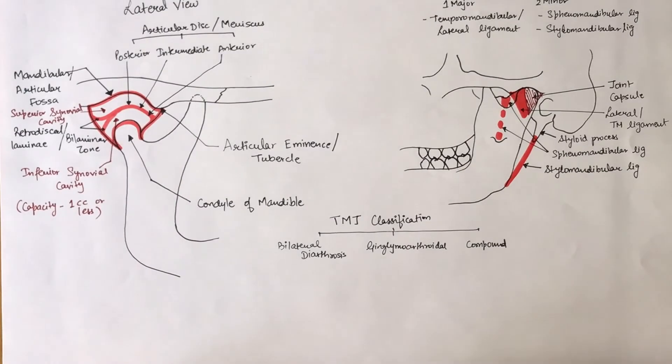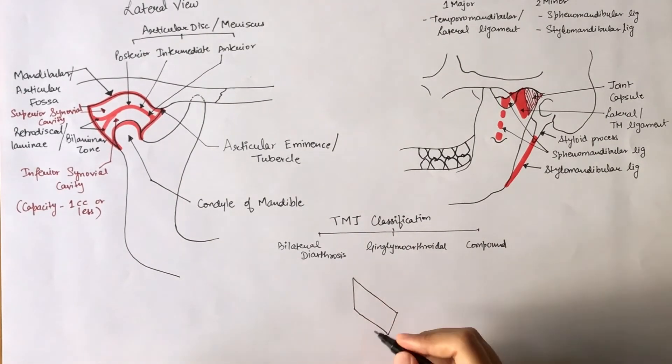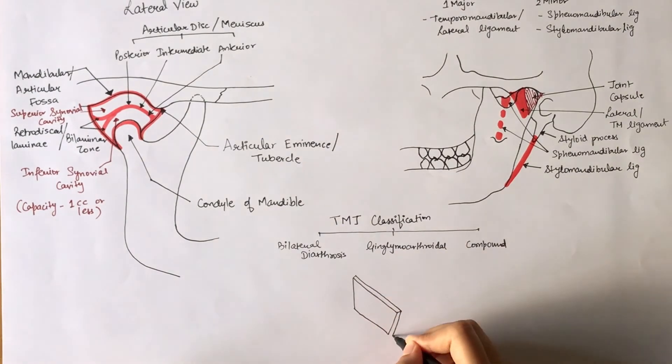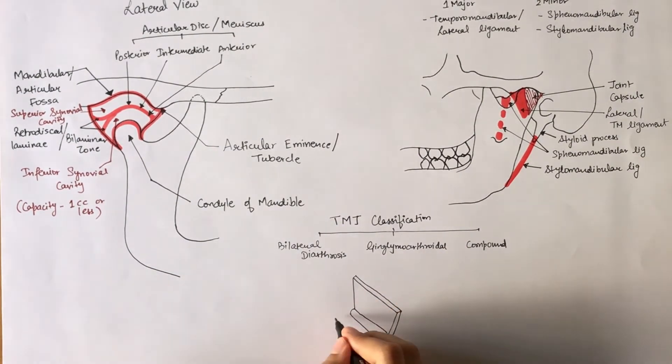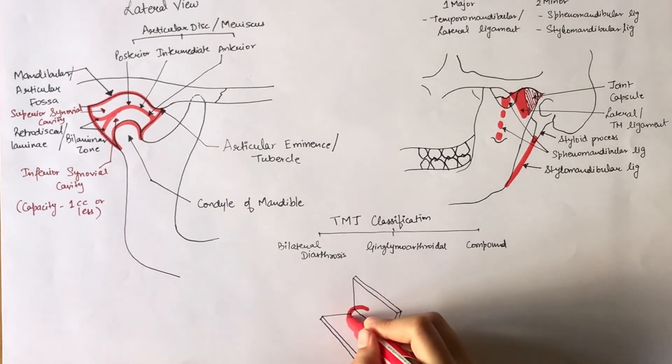Alright, moving on, next is ginglymoarthrodial joint which is a hinging and a gliding joint. Ginglimus meaning hinge joint, it allows motion in one plane such as backward and forward motion.